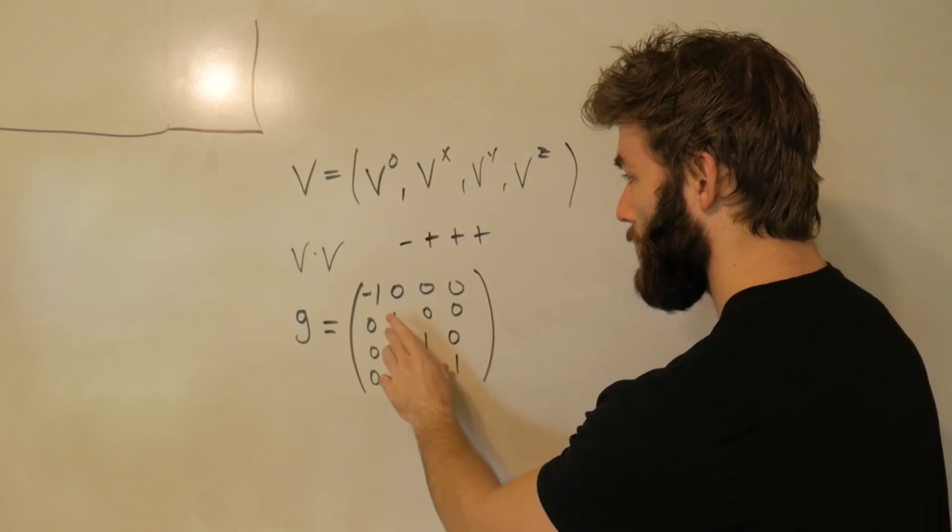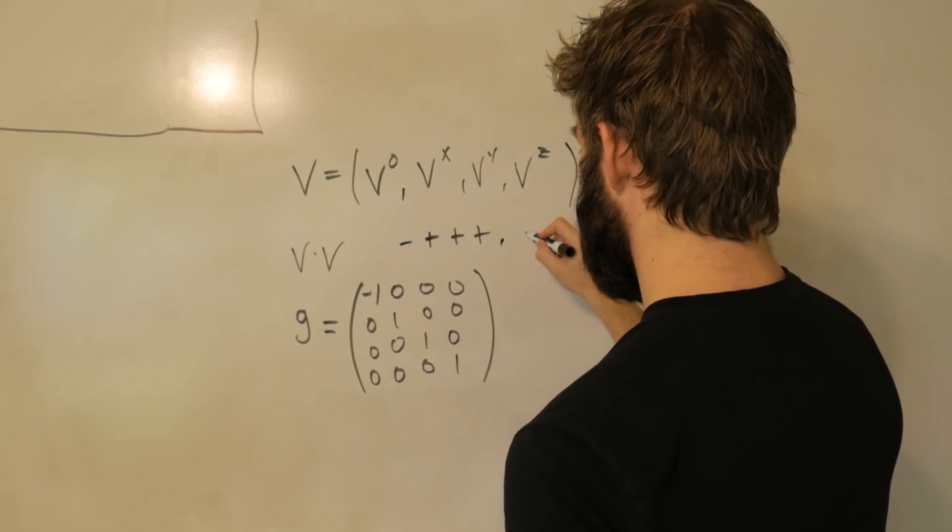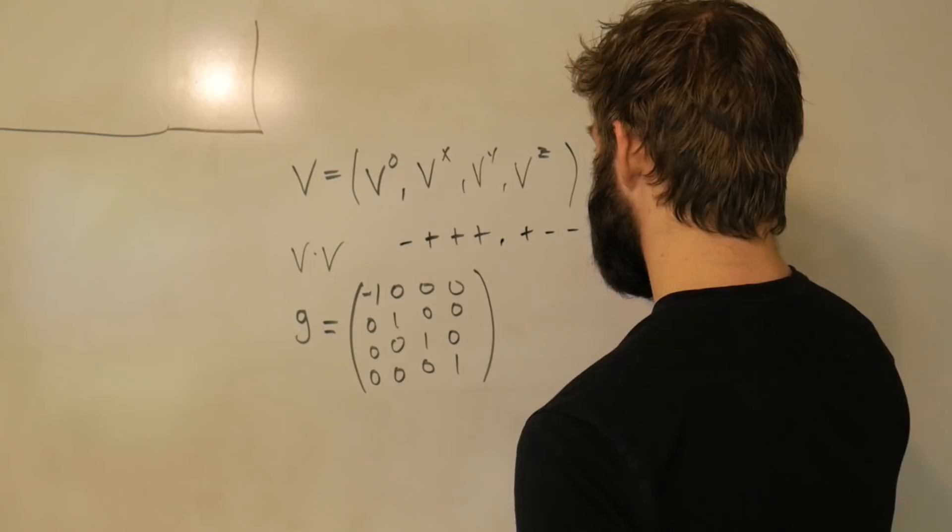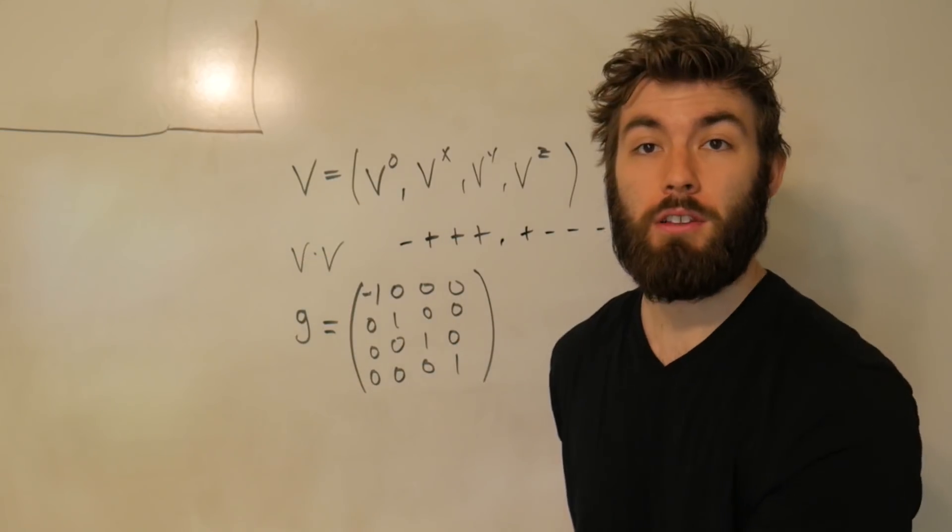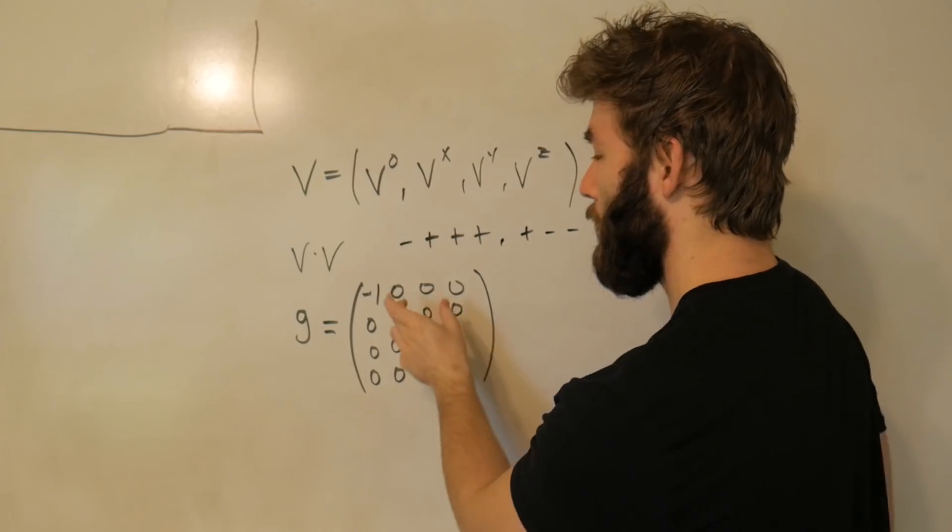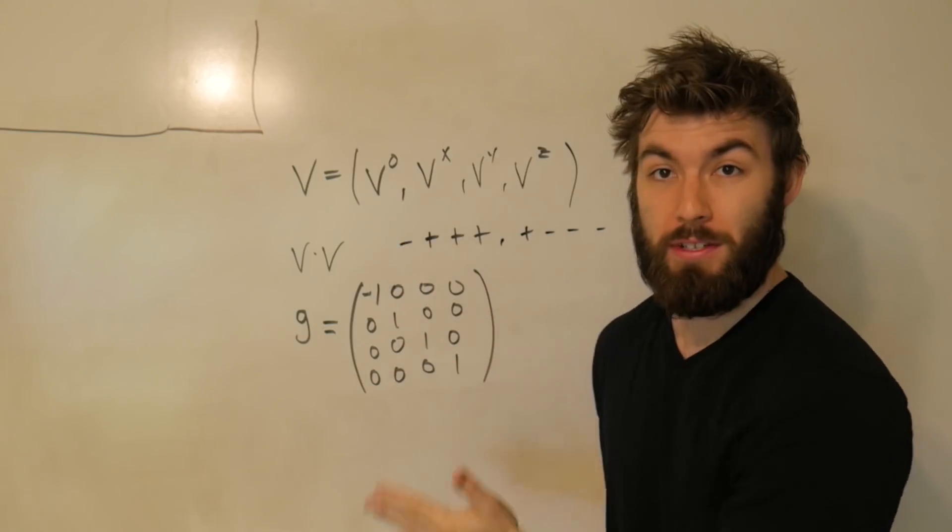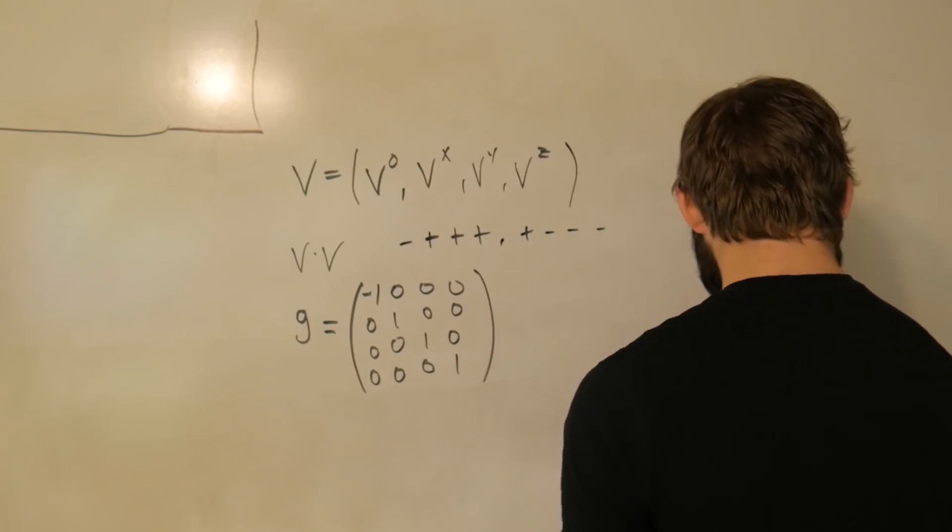In fields like particle physics, the metric signature actually just goes by plus, minus, minus, minus. But we're going to simplify this whole dot product thing in a little bit to where it'll mean more if we use this metric signature.